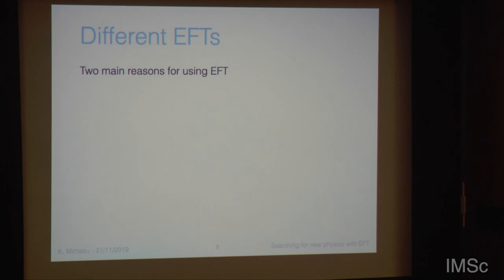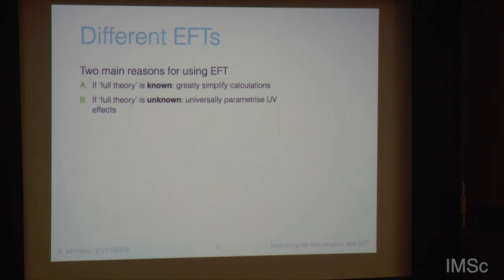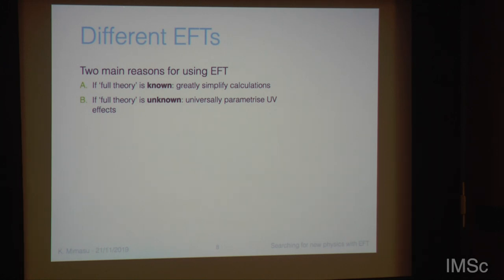Your Lagrangian for the full theory, which might involve some light fields and some heavy fields, gets converted into a Lagrangian only involving the light fields, plus an effective Lagrangian which encodes indirect effects from the mass scale of the heavy fields. There are two broadly different reasons for using an EFT. First, if you know the full theory already, you might use an EFT description to simplify your calculations. If the full theory is unknown, you can use the EFT framework to universally parametrize effects of heavy new physics. The first is a top-down approach, while the second is a bottom-up approach.